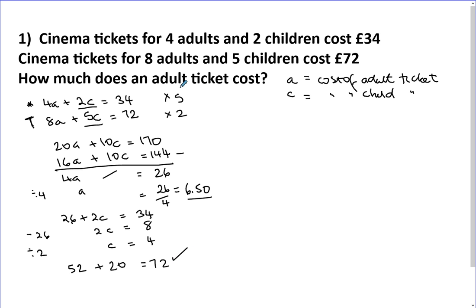So the question was how much does an adult ticket cost? So the adult ticket costs £6.50. I hope that was quite easy. If not, then just hide my answer, try to do it again and then just work with me until you understand. Let's try another example.